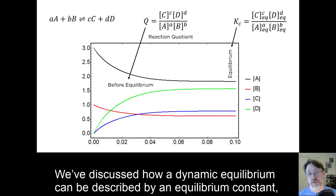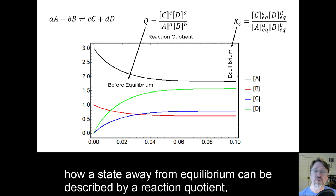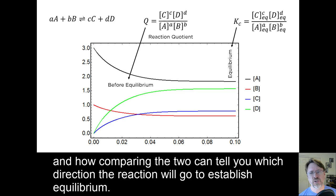We've discussed how a dynamic equilibrium can be described by an equilibrium constant, how a state away from equilibrium can be described by a reaction quotient, and how comparing the two can tell you which direction the reaction will go to establish equilibrium.